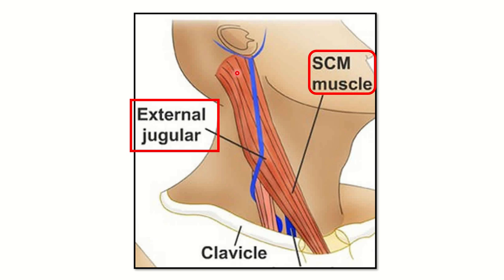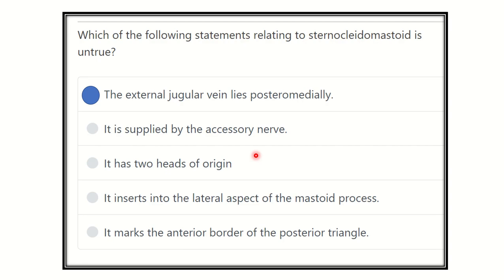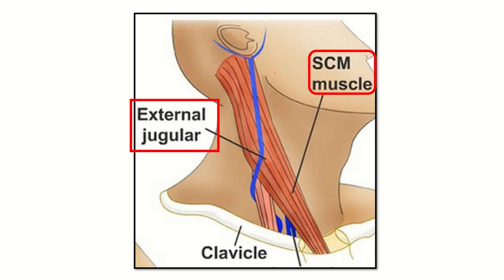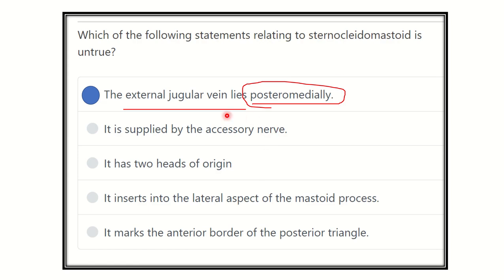Here we can see the sternocleidomastoid muscle and a vessel — this is the external jugular vein. The external jugular vein passes along the sternocleidomastoid muscle on its lateral side. This side is the medial side and this side is the lateral side, so the external jugular vein lies lateral to the sternocleidomastoid muscle — not posteromedially.